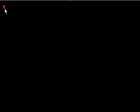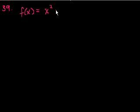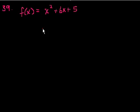We're on problem 39. It asks which ordered pair is the vertex of f(x) = x² + 6x + 5. Now, finding vertexes — there's a formula, negative b over 2a, but you might forget that. The whole goal isn't just to pass an algebra exam, it's to learn algebra. When you learn calculus, you'll learn a much easier way to find minimum and maximum points, but there's an intuitive way in algebra as well.